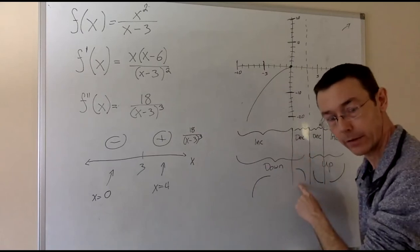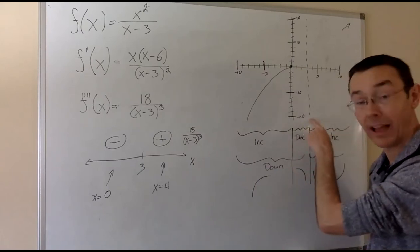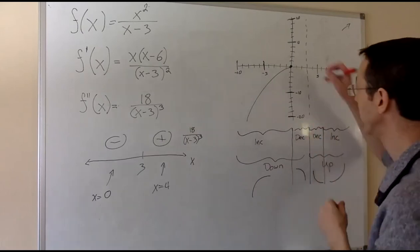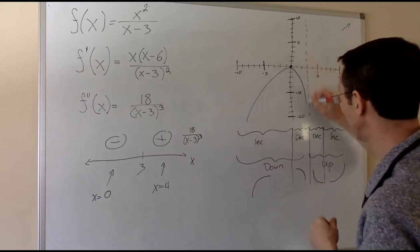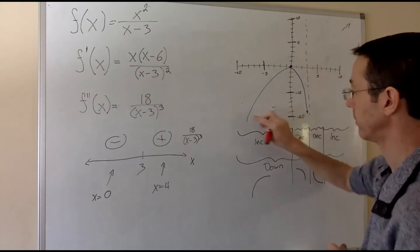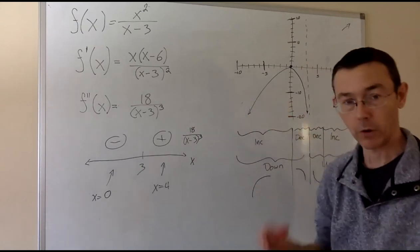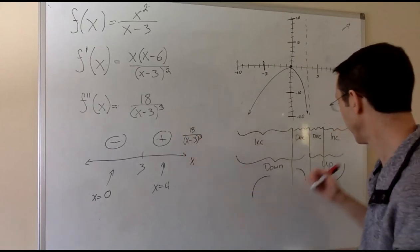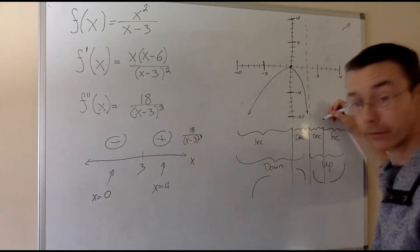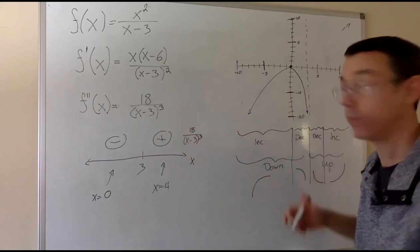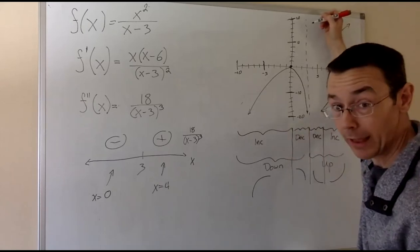Then between 0 and 3, decreasing, concave down. I need to connect that with this vertical asymptote that I have at x equals 3. Now we look between 3 and 6, decreasing, concave up. Of course, we're coming from a vertical asymptote.